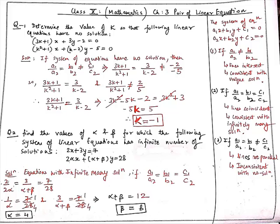As per the system of linear equations in two variables, when we compare the ratios: if a1/a2 ≠ b1/b2, then lines intersect at one common point, so the system is consistent with a unique solution. If a1/a2 = b1/b2 = c1/c2, then the lines are coincident and the system is consistent with infinitely many solutions. And if a1/a2 = b1/b2 ≠ c1/c2, then lines are parallel and the system is inconsistent with no solution.